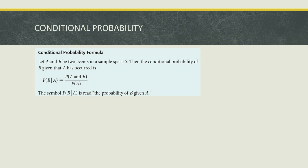Conditional probability formula: let A and B be two events in the sample space S. The conditional probability of B given that A has occurred is P(B|A) = P(A and B) / P(A). This symbol is read as the probability of B given A. So this is how to find the conditional probability — you find the probability of the second event given that the probability of the first has already been given.